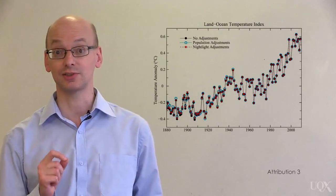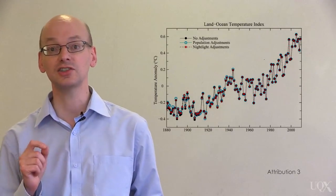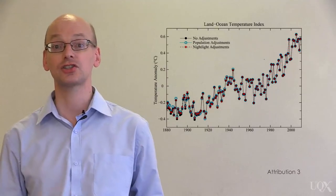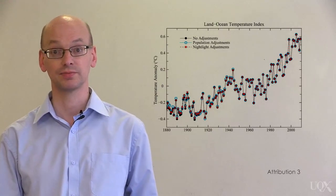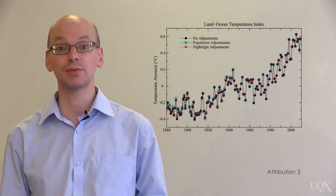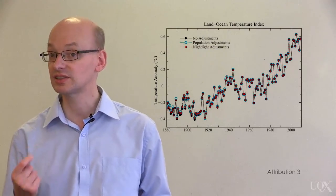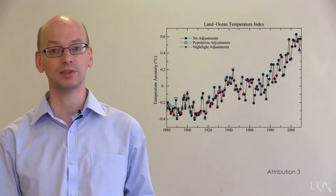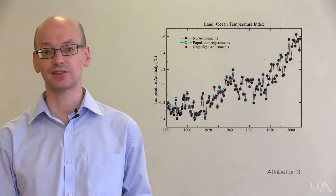NASA has done a detailed analysis in which they adjust urban stations to match the nearest rural stations. Here is what the global temperature record looks like using different methods to identify urban stations. The results are almost identical.